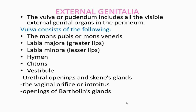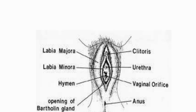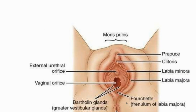External genitalia — the vulva and pudendum — includes all the visible external genitalia organs in the perineum. The vulva consists of the following structures: mons pubis (also called mons veneris), labia majora, and labia minora — these are the outer and inner lips. Also included are the hymen, clitoris, vestibule, urethral opening, Skene's glands, the vaginal orifice or introitus, and the openings of the Bartholin glands. In this colorful diagram we can see clearly the labia majora, labia minora, clitoris, vaginal orifice, and the orifice of the external urethra.